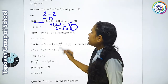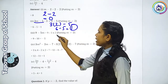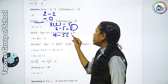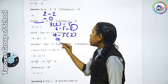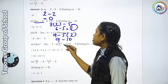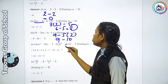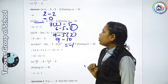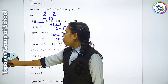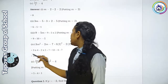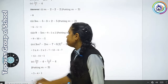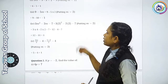Third number 9-5m. तो 9-5m की value कितनी? m=2, तो 9-5×2=9-10=minus 1. ये Third का answer है। इसी तरह से आपको values रखनी हैं और find out करनी है।